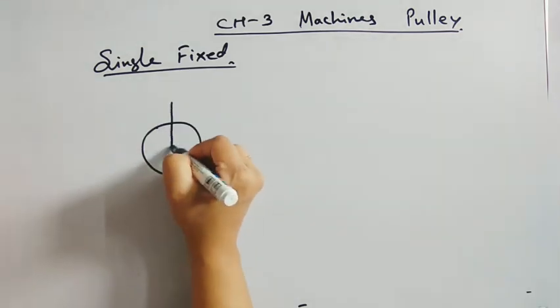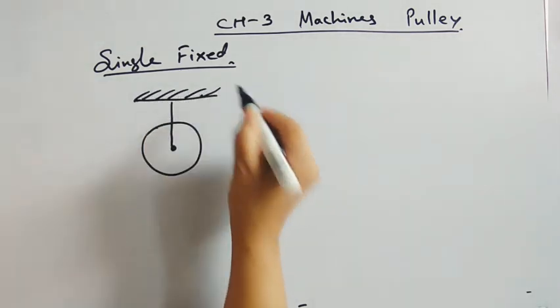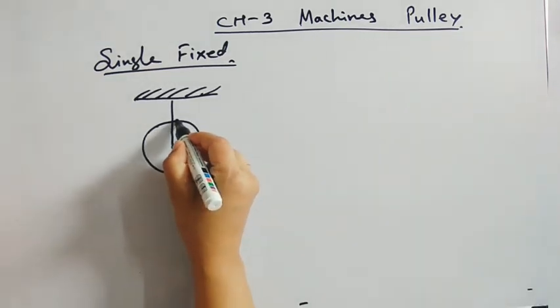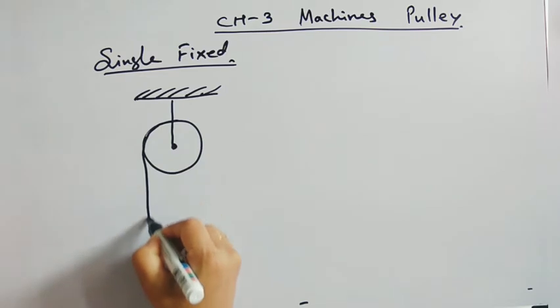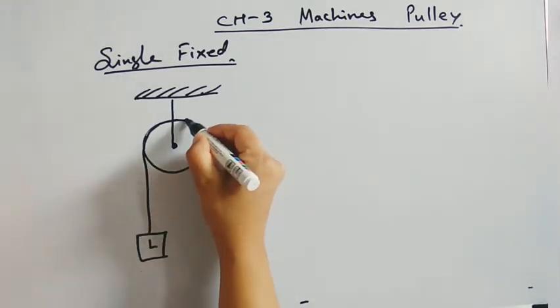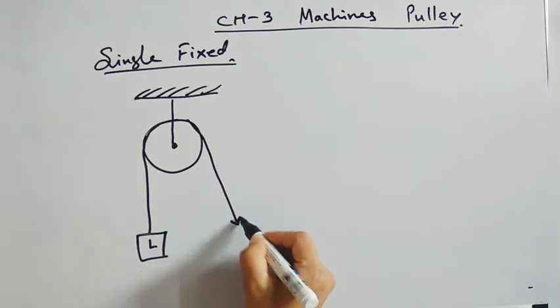Now this pulley is used to lift load. There is a string which carries the load L. The direction of load will be downwards, and the same string on the other side is pulled, which is effort.